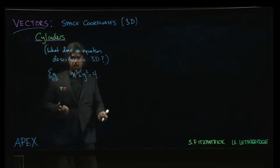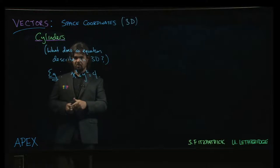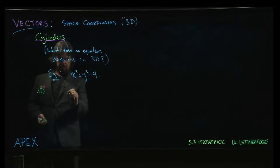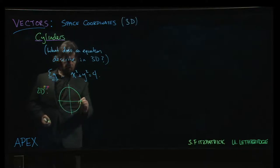Now we know what that is in two dimensions. In two dimensions, it's a circle. We know that is simply a circle of radius 2 centered at the origin.